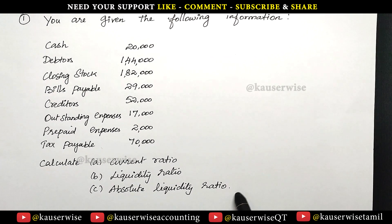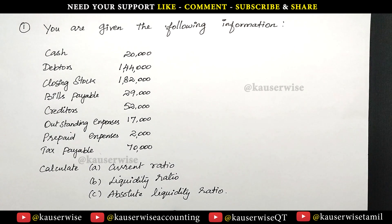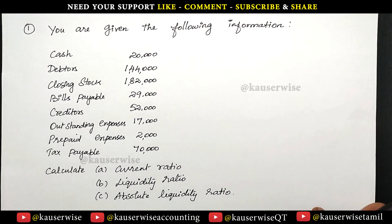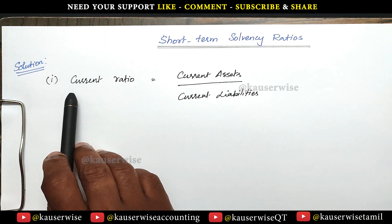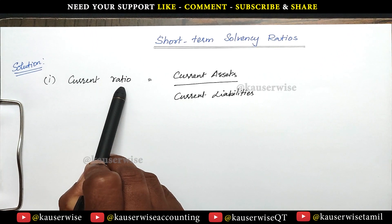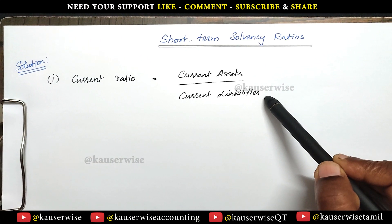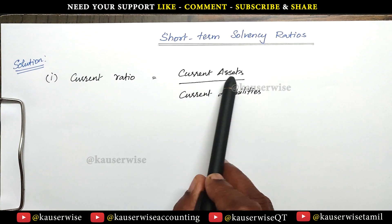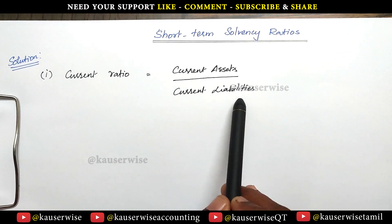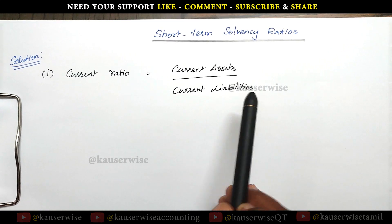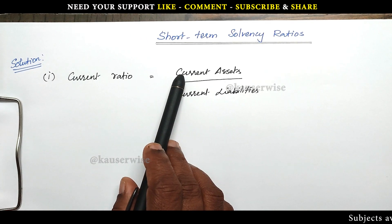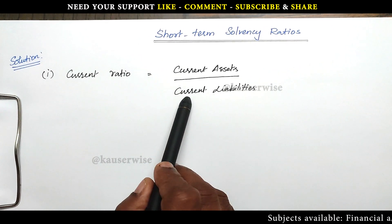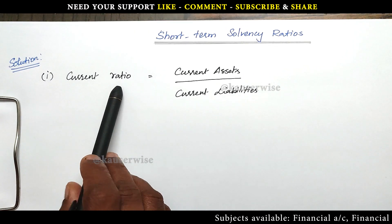These are the three ratios which come under short term solvency. Now let's see the solution. First we are going to find out the current ratio. The formula is current assets divided by current liabilities. Just find out the current assets total and current liabilities total and apply the formula to find out the current ratio.